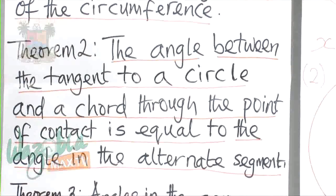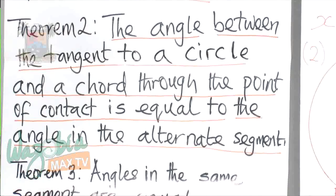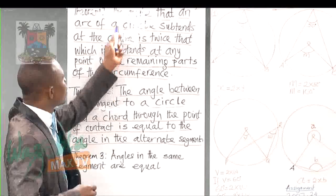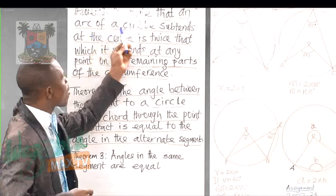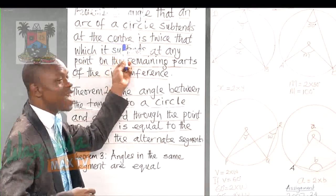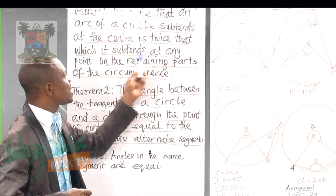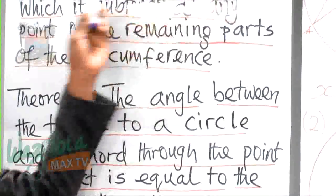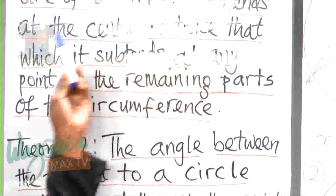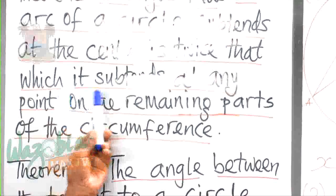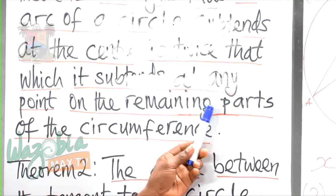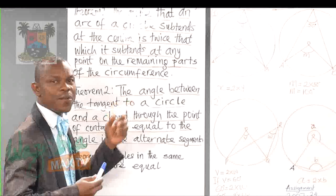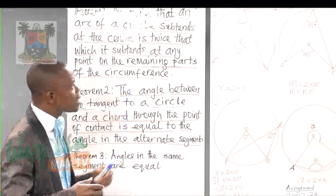What is the song? There is a common song you sing in school or in church — 'When the Saints Go Marching In.' I would like to use that tune here. The angle that an arc of a circle sustains at the center is twice that which it sustains at any point on the remaining parts of the circumference. The more you sing that song, you will definitely remember this theorem and be able to apply it. Let's look at an example.